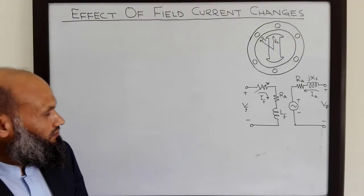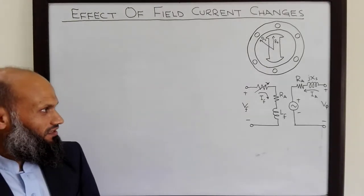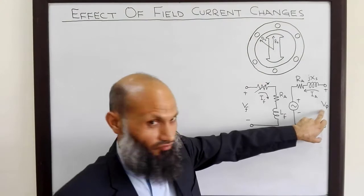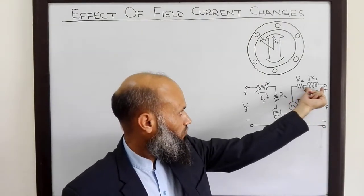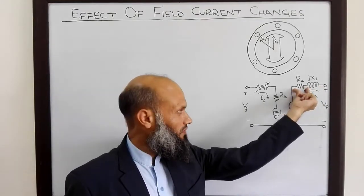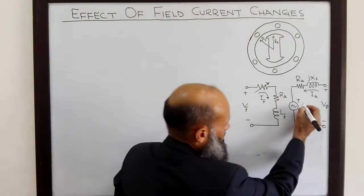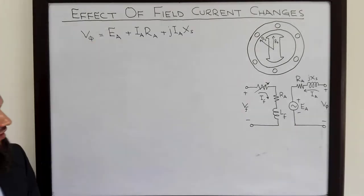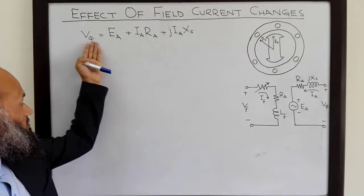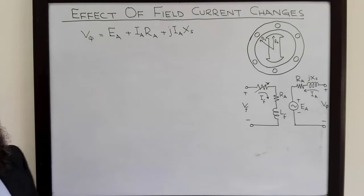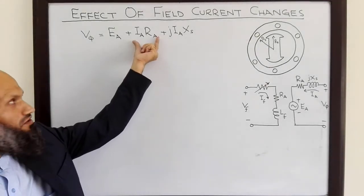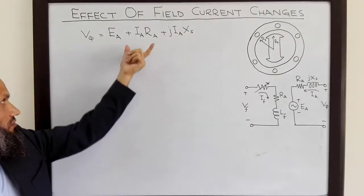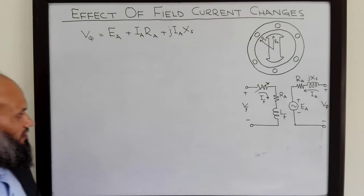We shall explain the working of this synchronous motor with the help of phasor diagrams. We have already learned how to sketch the phasor diagram for a synchronous motor. The phase voltage equals the voltage drop across the inductive reactance plus the voltage drop across resistance plus the internal generated voltage Ea. For a real synchronous motor, Ra is much much less than Xs, so we can just ignore this term and sketch the phasor diagram.